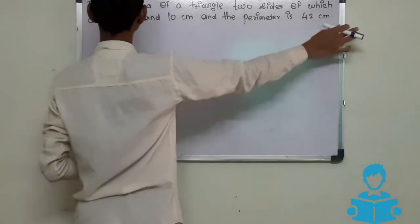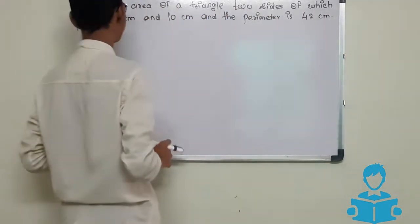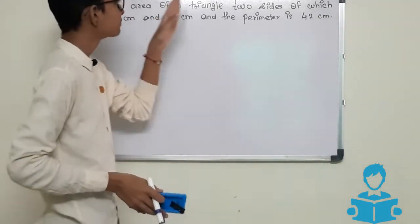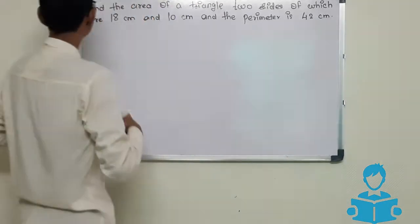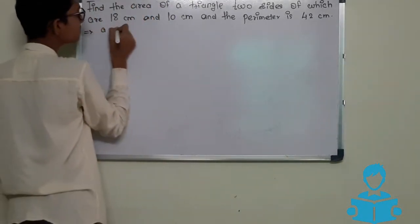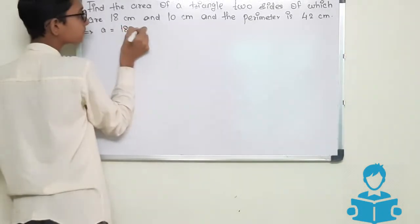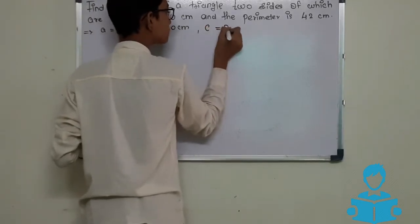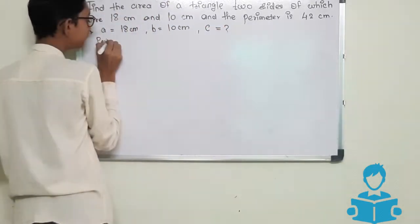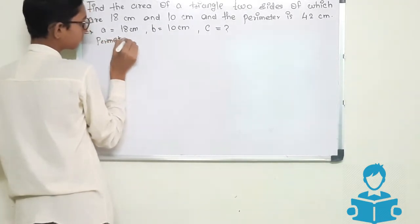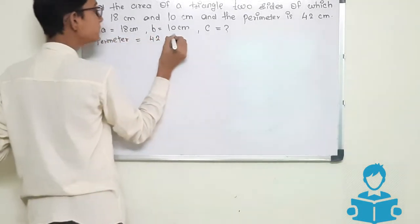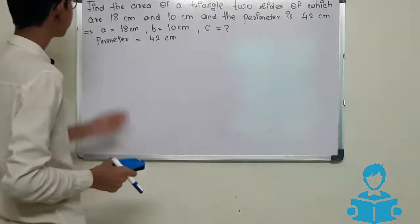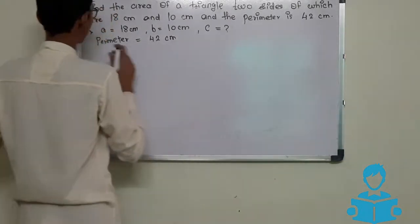Now we will take a simple example. Find the area of a triangle, two sides of which are 18 centimeters and 10 centimeters, and the perimeter is 42 centimeters. So a equals 18 centimeters, b equals 10 centimeters, we don't know the value of c, and the perimeter is given as 42 centimeters.